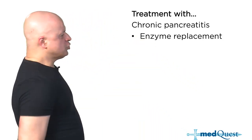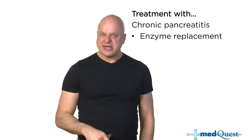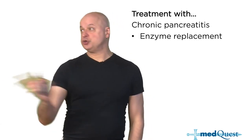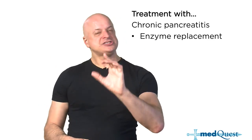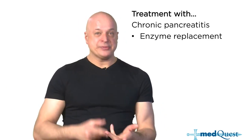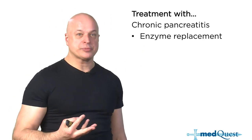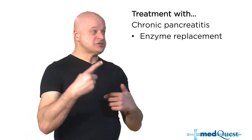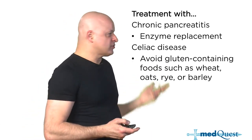Chronic pancreatitis can be treated with over-the-counter enzyme replacement — amylase, lipase, and trypsin are considered dietary supplements. Giving enzyme replacement to a normal person would result in the enzymes being absorbed like protein, since 40% of the protein in the human diet is actually digestive enzymes that get reabsorbed after doing their job. Celiac disease is managed by avoiding gluten — wheat, rye, oats, and barley.